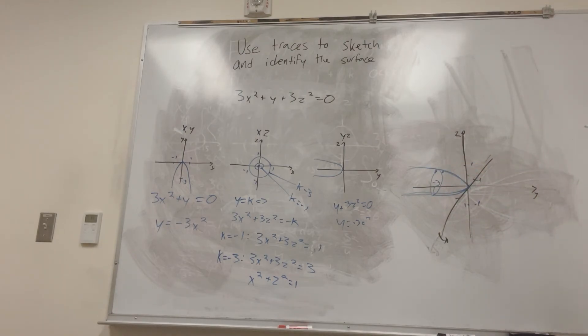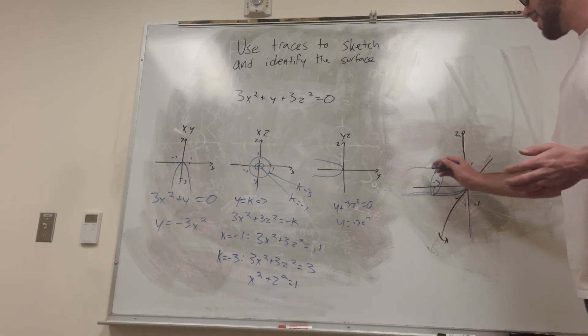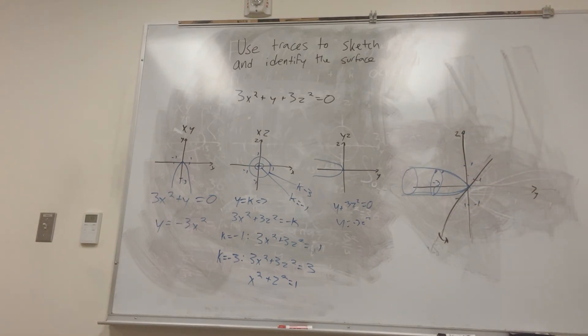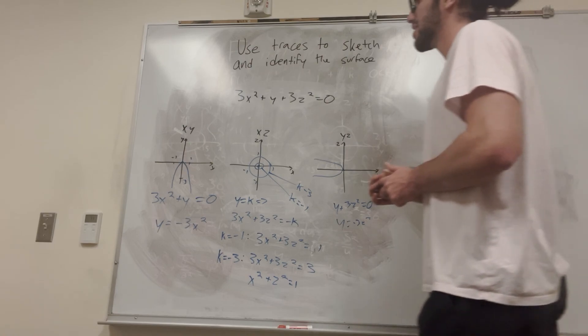So what you're seeing is like a parabola, kind of in 3 space. It's going down, it's going down, and it's just getting bigger as it goes this way, but it starts at 0. So that's what we have here. That's how you can use traces to sketch and identify a surface.